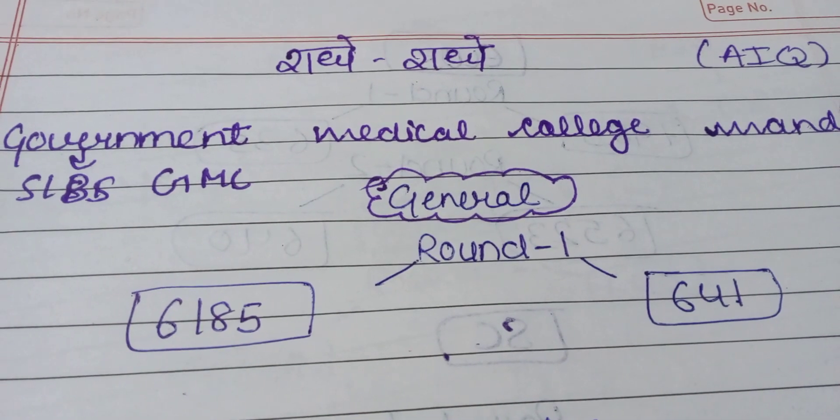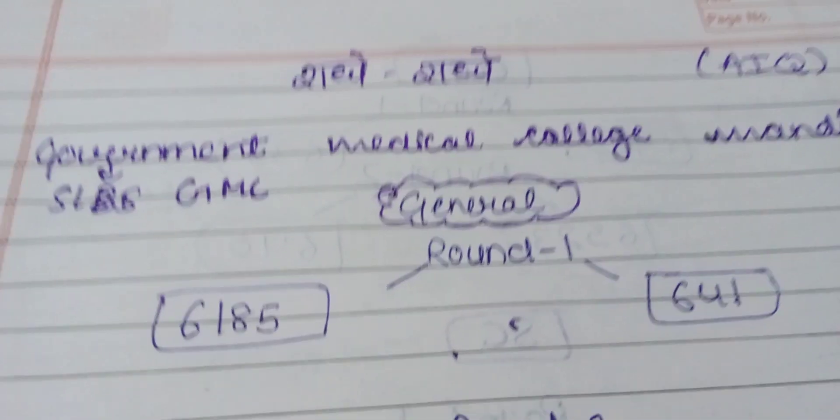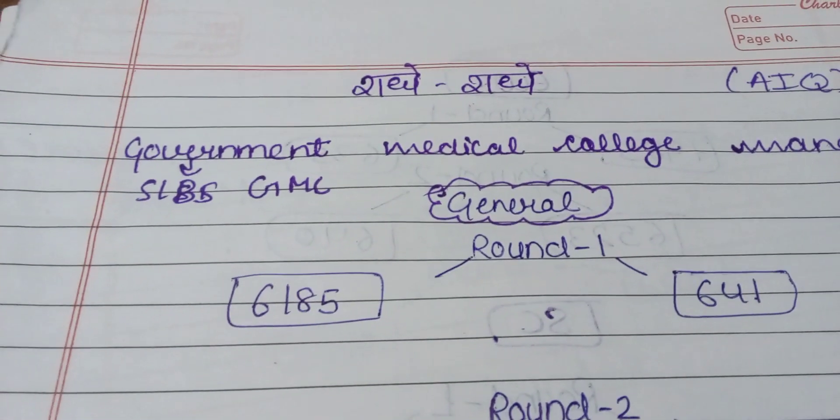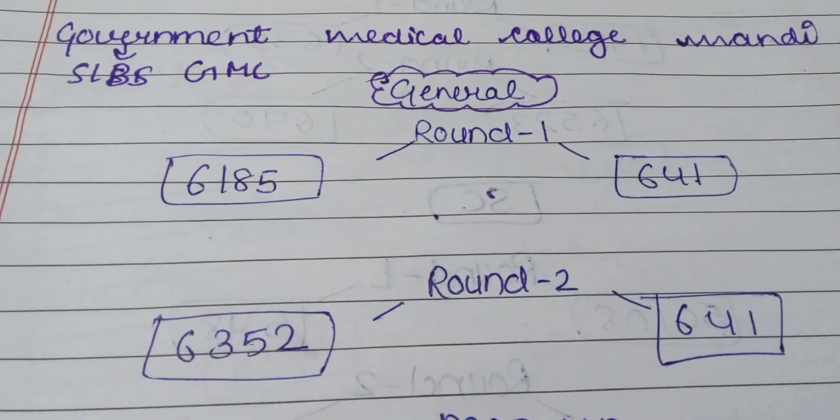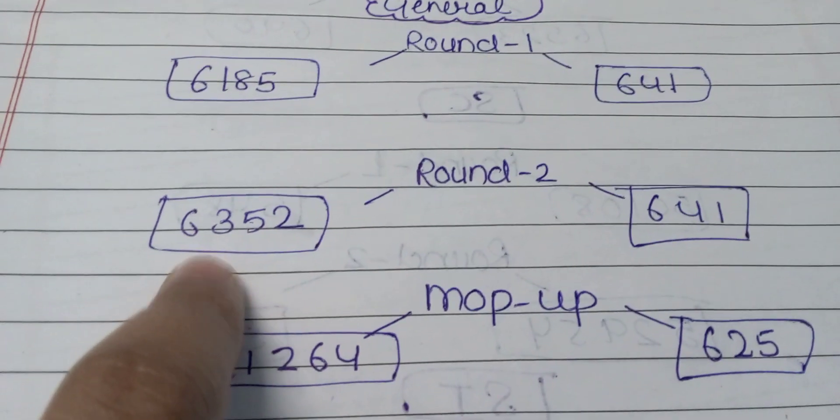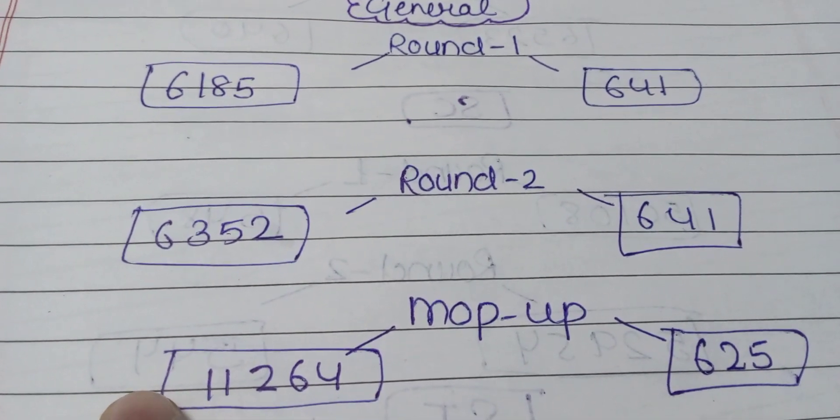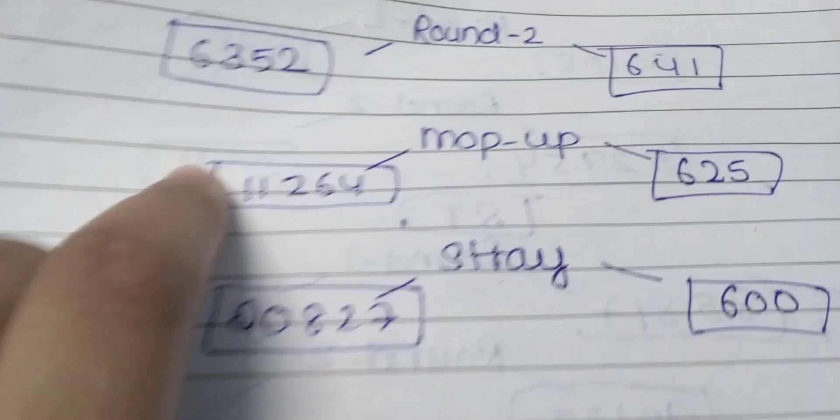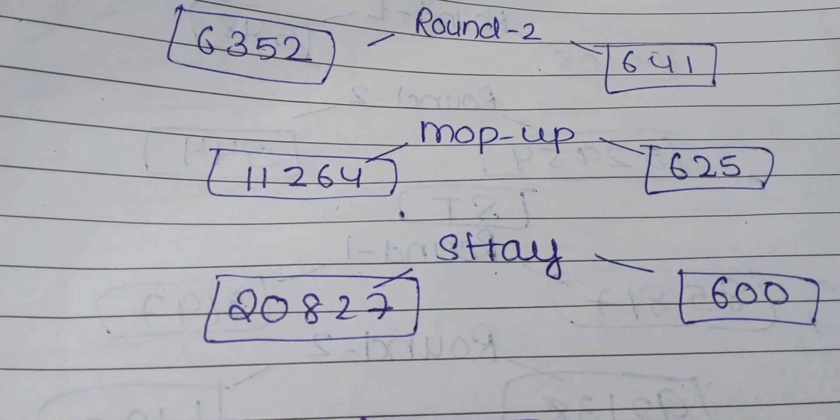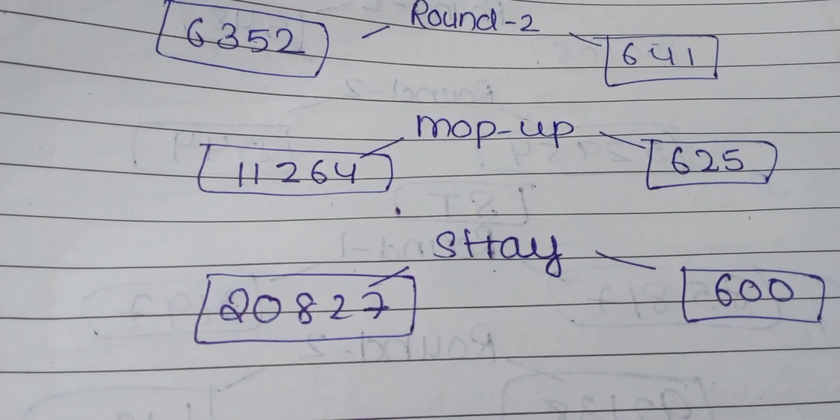The cutoff for general was 641 marks and 6185 rank. Round 2 was 641 marks and 6352 rank. Mop-up was 625 marks and 11264 rank.